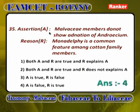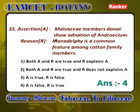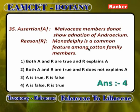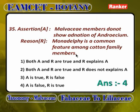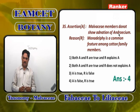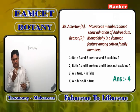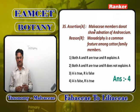Next, a matching or assertion-reason question. Malvaceae members do not show adnation with androecium — this statement is wrong. Malvaceae members do show adnation with the androecium. Why? Because the basal portion of the filament of the anther is attached to the petals, so it shows adnation.